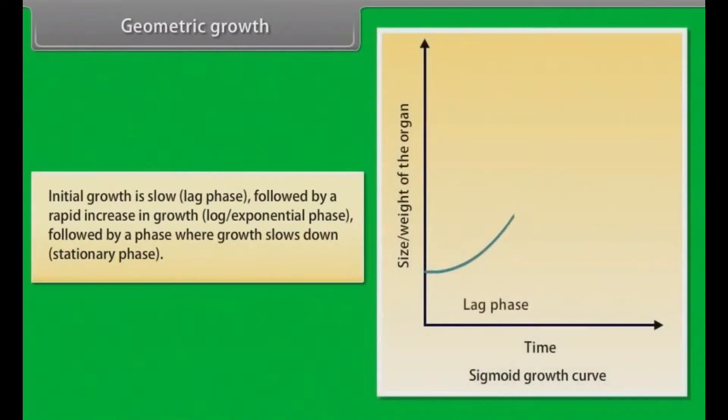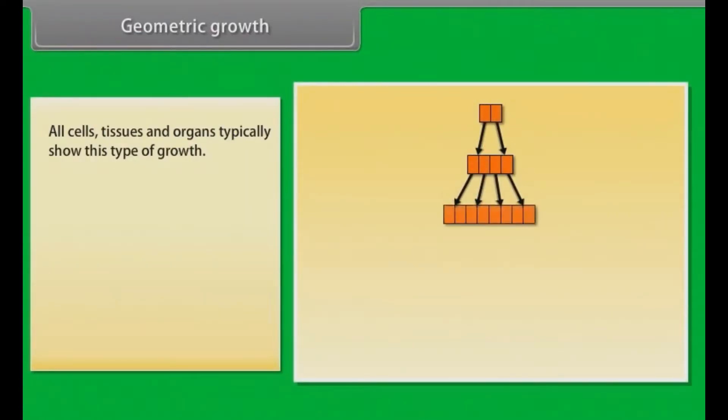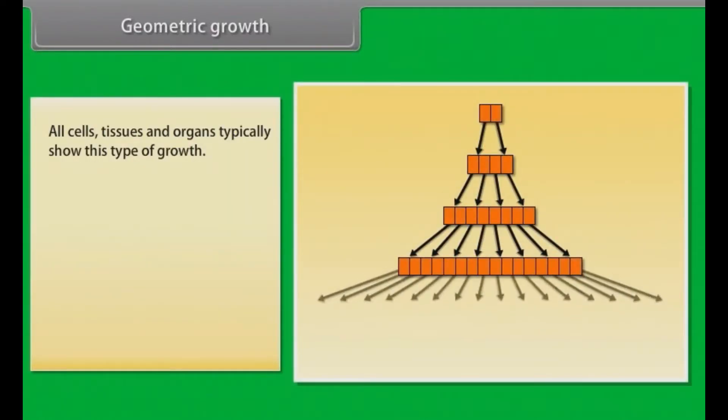Geometric growth: initial growth is slow, followed by a rapid increase in growth, followed by a phase where growth slows down. All cells, tissues and organs typically show this type of growth.